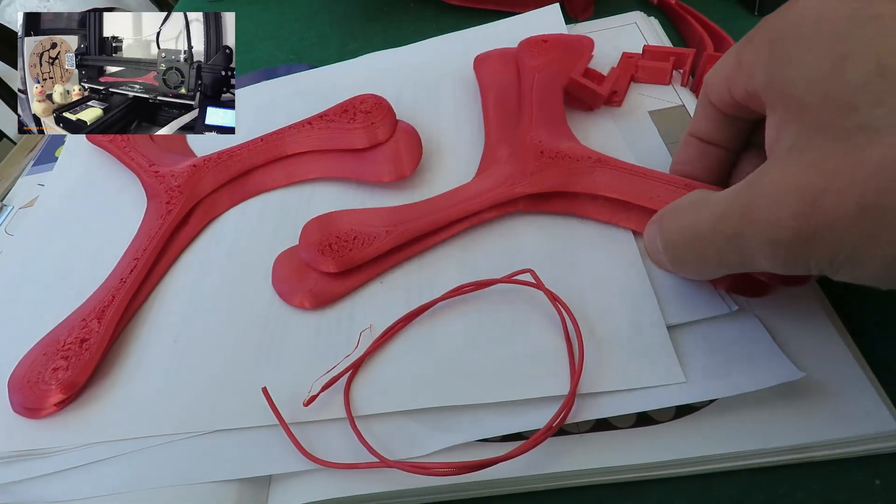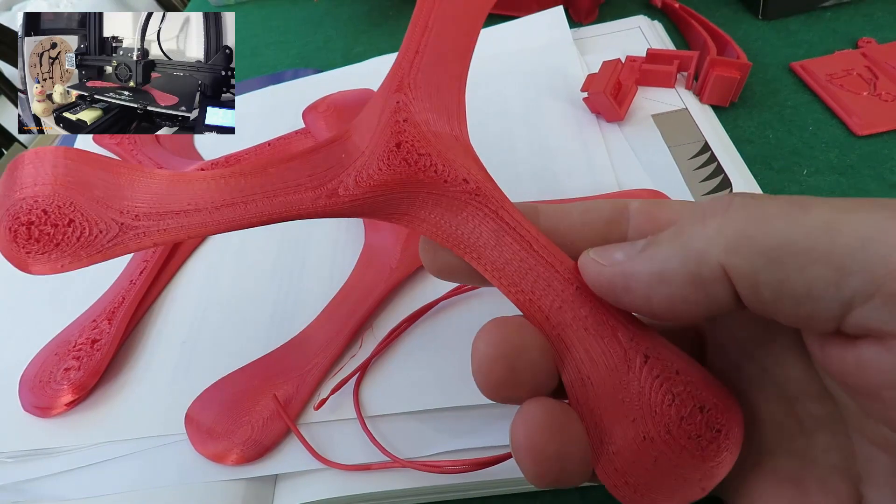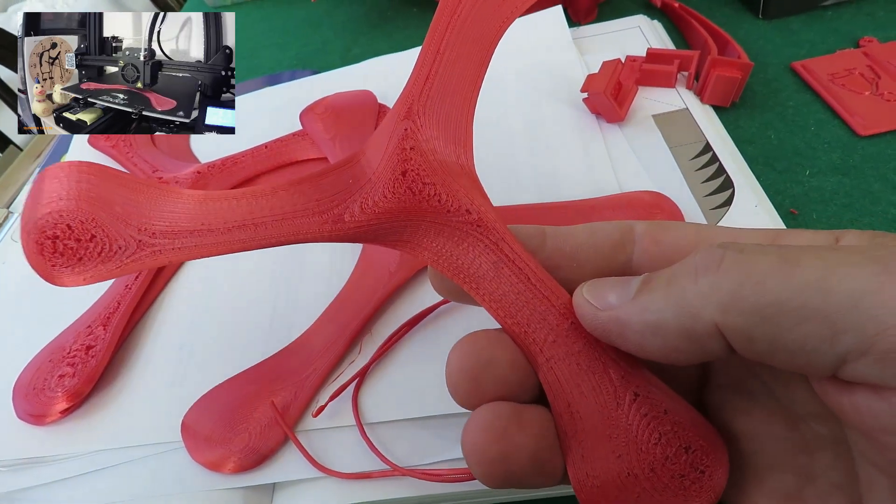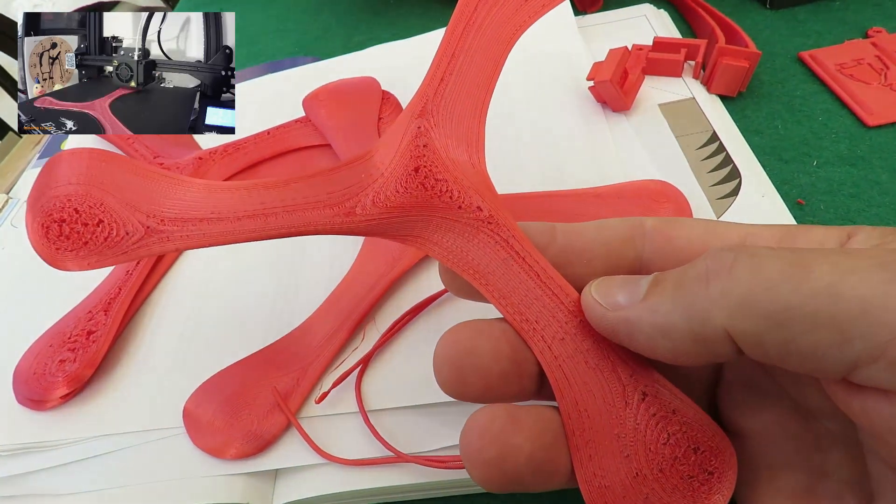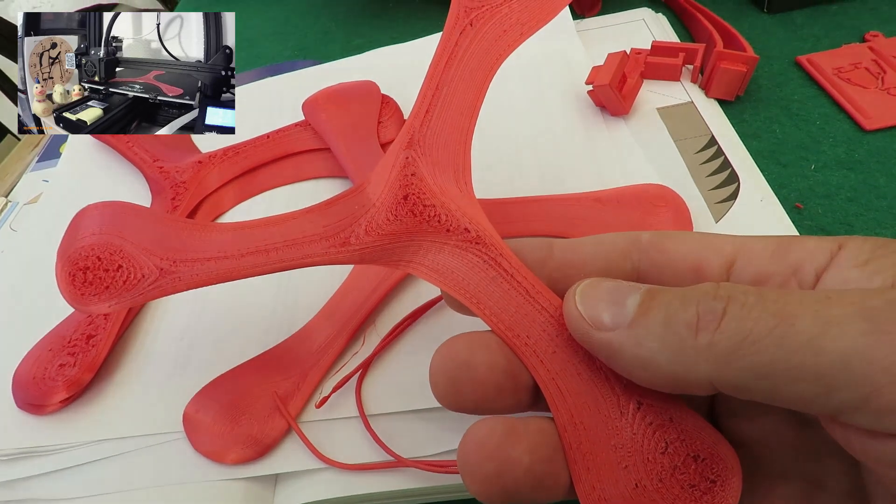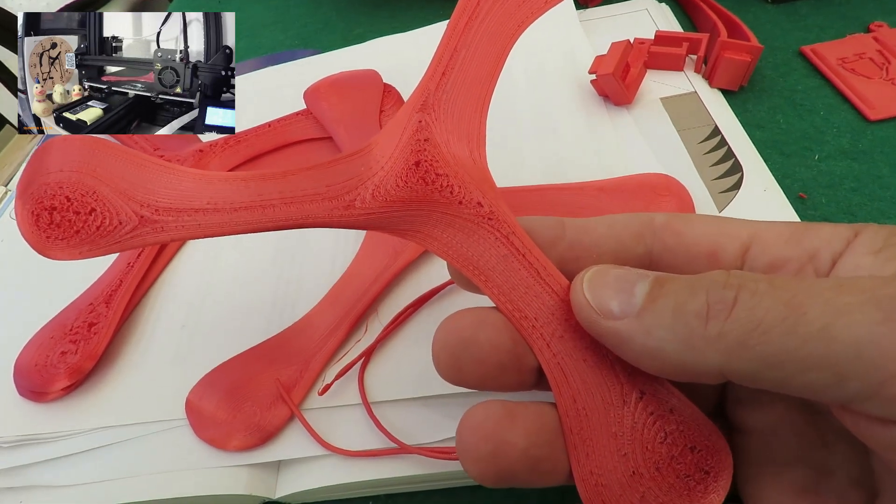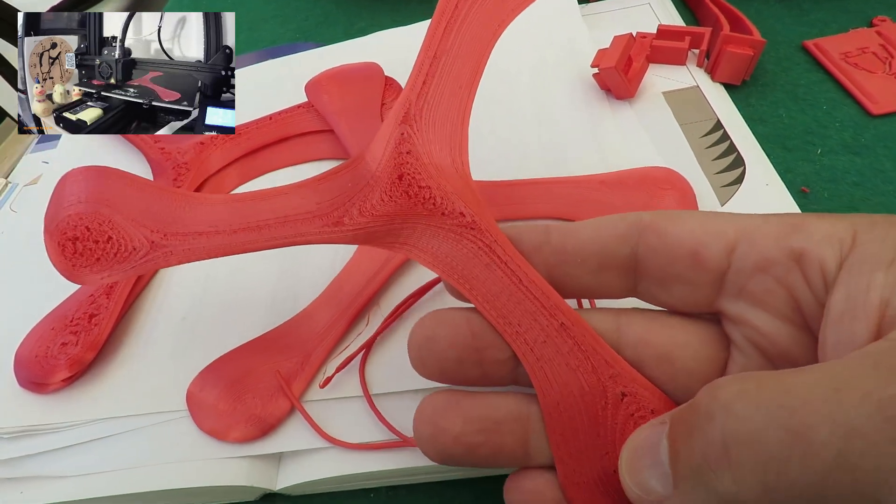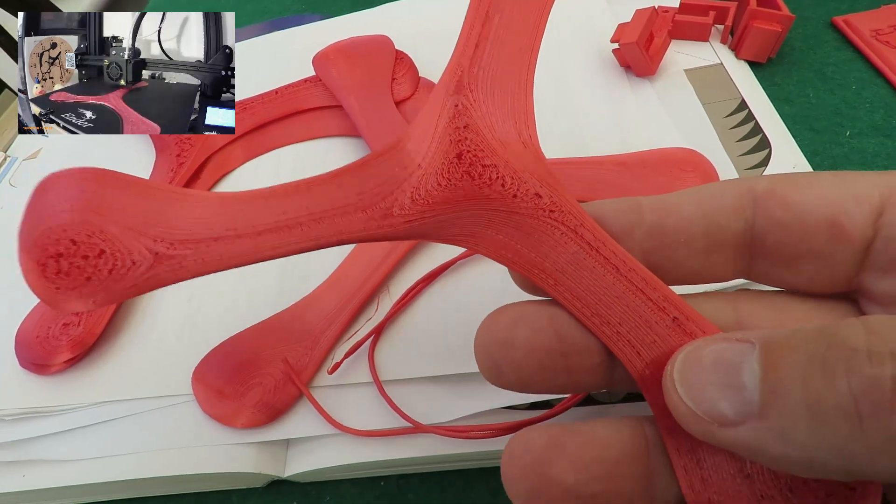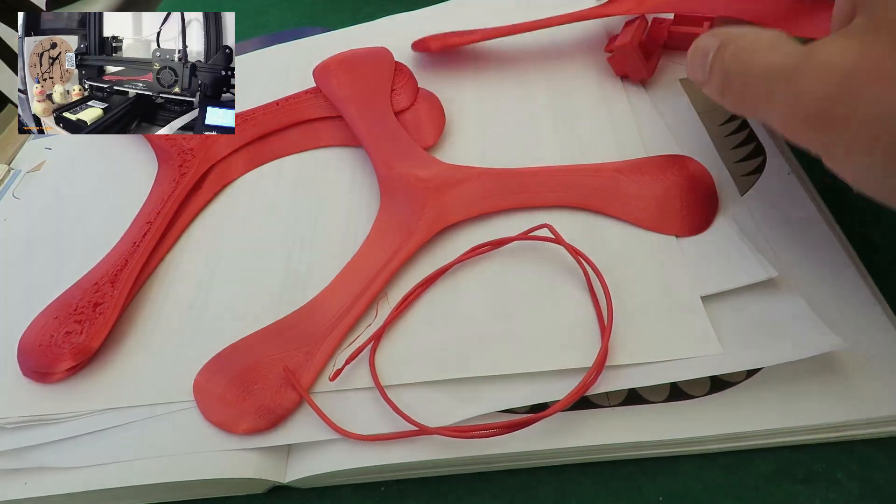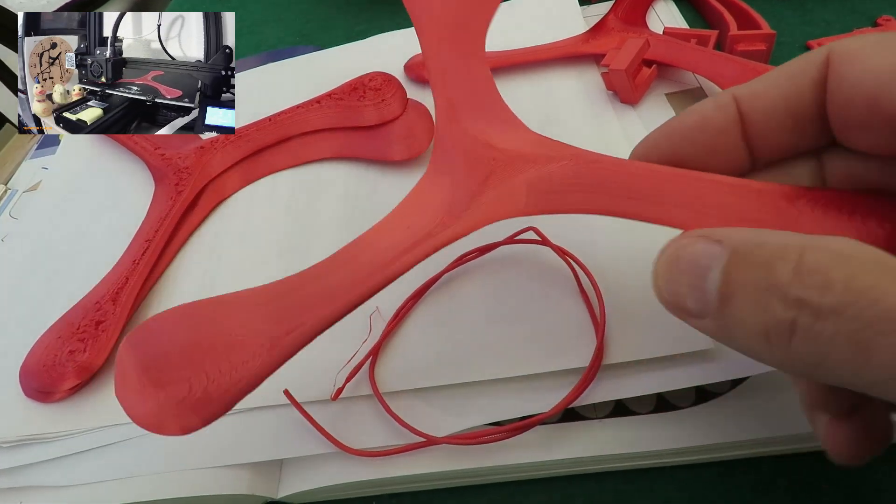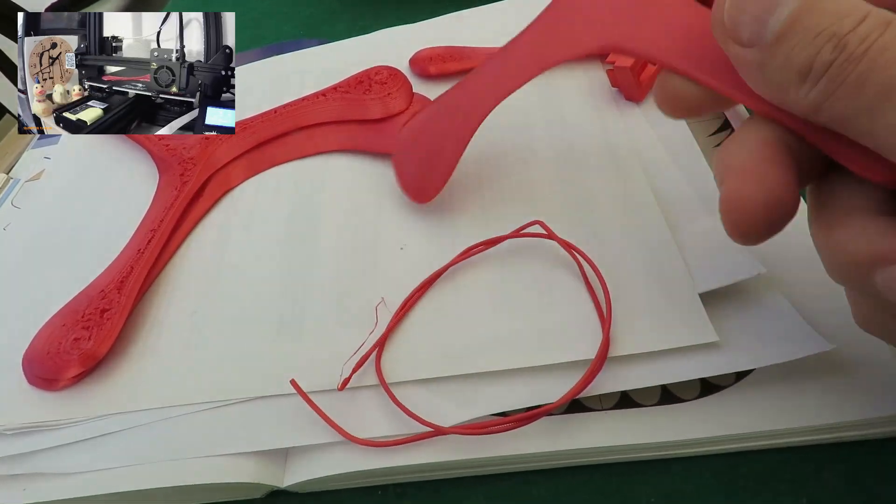These two, that one was printed on normal setting I think. So there's fast, normal and high quality. So that one's pretty porous. I think I may have shown you that one already. That one was printed on the best quality setting.